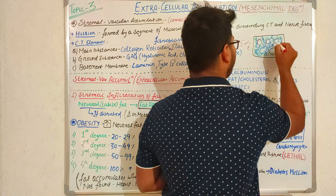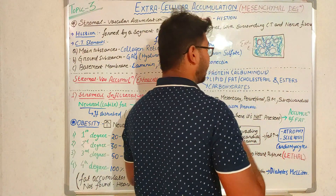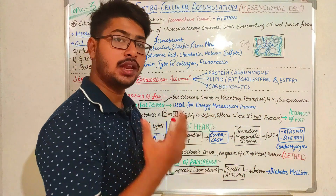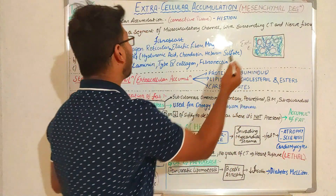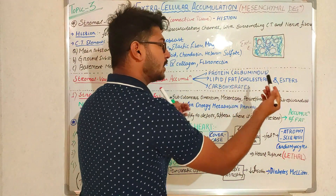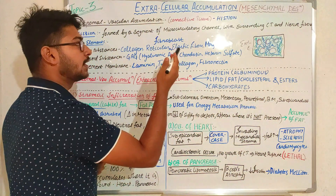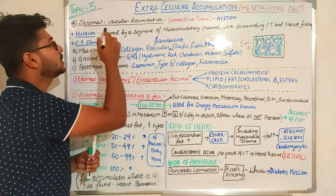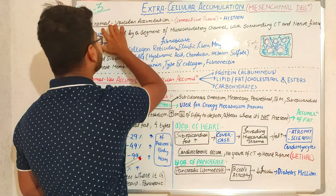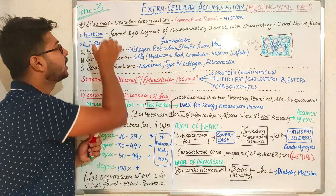If the accumulation of any substance occurs inside the cell, it will be called intracellular accumulation. If the accumulation of any substance occurs in the connective tissue — outside the cells in the extracellular spaces — then it will be called extracellular accumulation. The extracellular space mostly comprises stromal and vascular things.